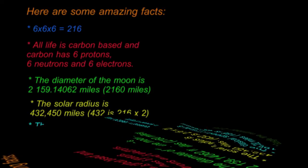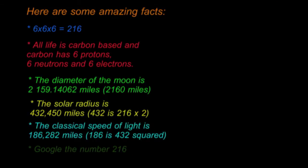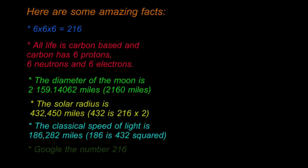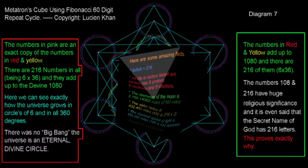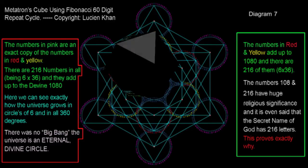The speed of light is approximately 186,000 miles per second. 432 squared is 186,624. You can see how everything boils from this 6 times 36 pattern or from the 216 number.